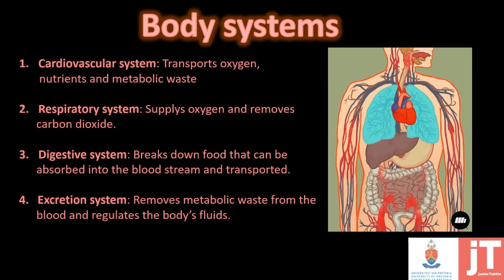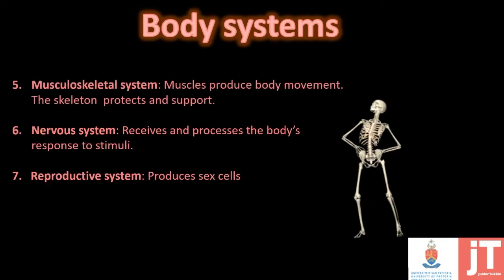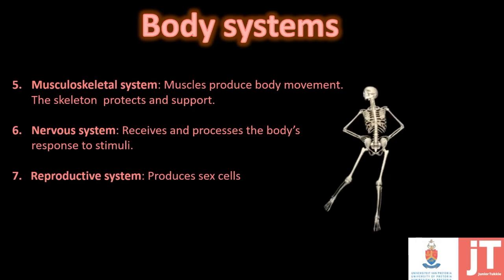Then we have the excretion system, which removes metabolic waste like water or salts from the body. Next we have the musculoskeletal system — your muscles for movement and the skeleton for protection. Then the nervous system, which receives and processes any stimuli from the environment. And lastly, the reproductive system, which produces sex cells and ensures the continuation of the species.